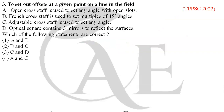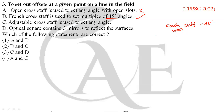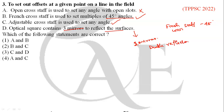Next question: setting out offsets at a given point on a line. Statement 1 — open cross staff is used to set any angle with open slots — this is wrong. Statement 2 — French cross staff is used to set multiples of 45-degree angles — correct. Statement 3 — adjustable cross staff is used to set any angle — correct. Statement 4 — optical square contains three mirrors to reflect the surface — wrong; it contains only two mirrors and works on the principle of double reflection. So only statements B and C are correct, making option 2 the correct answer.